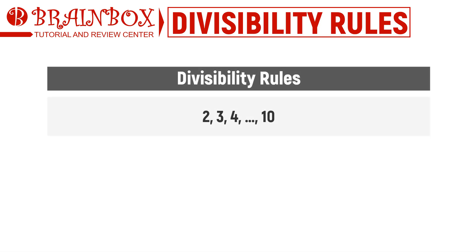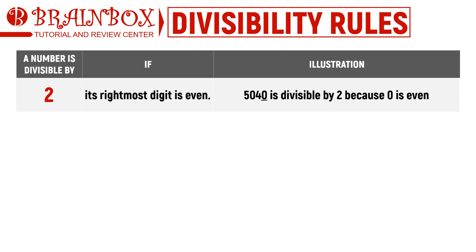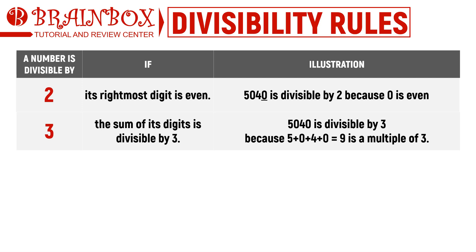Now let's talk about the divisibility rules for 2 all the way up to 10. We'll apply them to the number 5040 for a practical example. By looking at 5040's rightmost digit, we can immediately tell that it is divisible by 2 because 0 is an even number. To check for divisibility by 3, we take the sum of the digits: 5 + 0 + 4 + 0 = 9. Since 9 is a multiple of 3, 5040 is also divisible by 3.